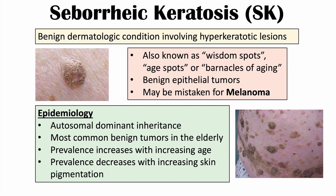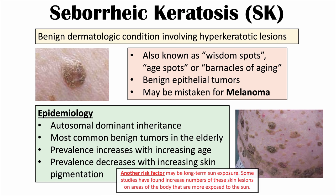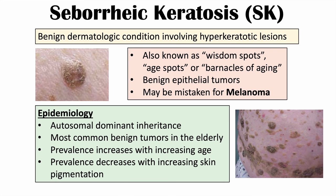Another factor that influences this condition is the pigment of a patient's skin. The prevalence actually decreases with increasing skin pigmentation, meaning that as skin pigmentation decreases, the prevalence increases. So to summarize: family history, increasing age, and decreased skin pigmentation are all risk factors for having seborrheic keratosis.